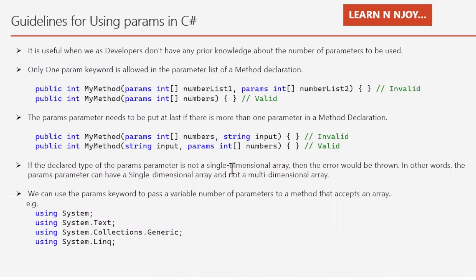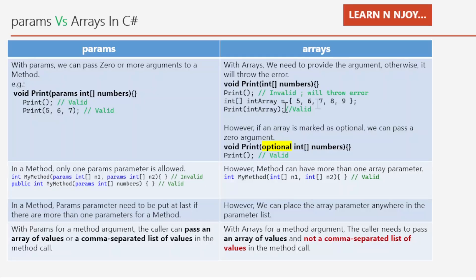Guideline four: if the declared type of the params parameter is not a single-dimensional array, an error will be thrown. The params parameter can only be a single-dimensional array, not a multi-dimensional array — this is very important. Guideline five: you can use the params keyword to pass a variable number of parameters to a method that accepts an array, using relevant namespaces such as System, System.Text, System.Collections.Generic, and System.Linq.